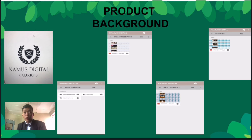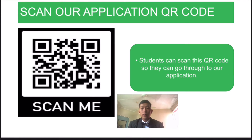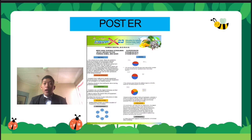In this product background, as you can see, our application logo. Inside the app there are 3 folders. Each folder is for restaurant, kitchen, and housekeeping. For students who ask about our application, students can scan this QR code to access our application. And as you can see, this is our poster for our product.